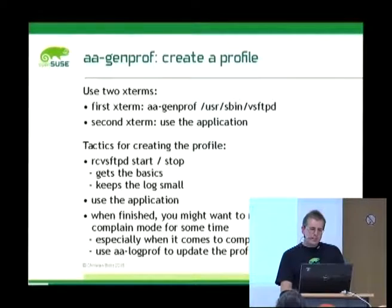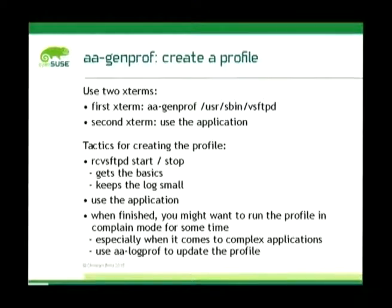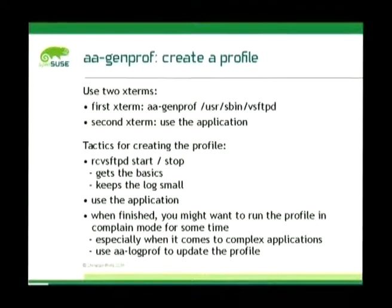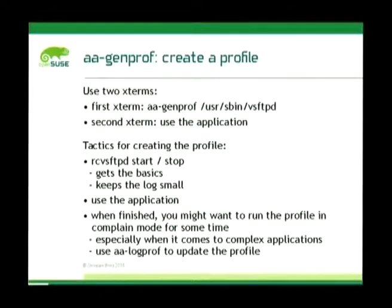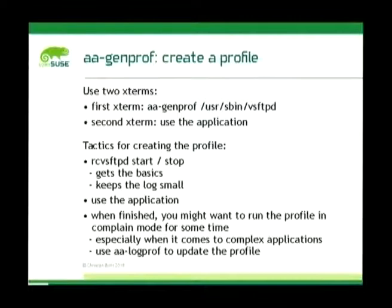In summary, when creating a profile you need two terminals. In the first one start aa-genprof, and in the second one just use your application. The general tactic is: first, when profiling a daemon, start and stop it — that gives you lots of log events. Create a profile from those as a start, then use the application and update the profile again. When finished, use aa-complain to keep the profile in learning mode for some time, because complex applications won't be fully profiled in ten minutes. Then run aa-logprof an hour later or so.